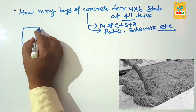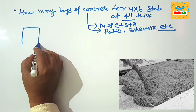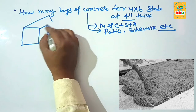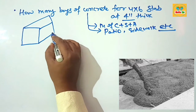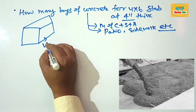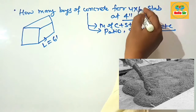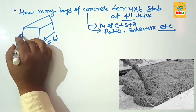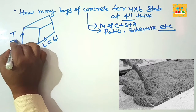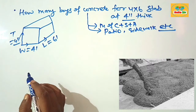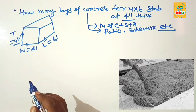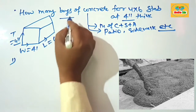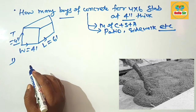Here we make a rough diagram to understand the different dimensions of this slab — the length, width, and thickness. The length is 6 feet, the width is 4 feet, and the depth or thickness of the slab is 4 inches.